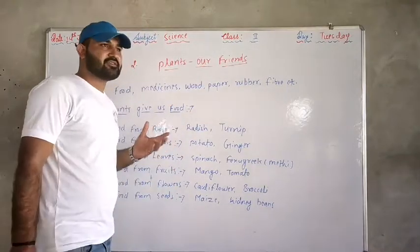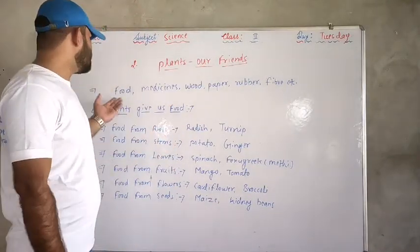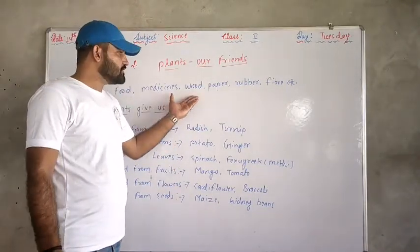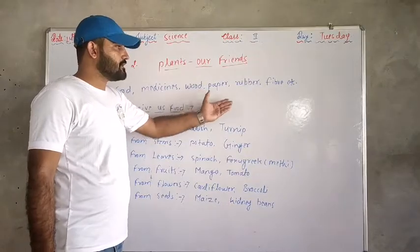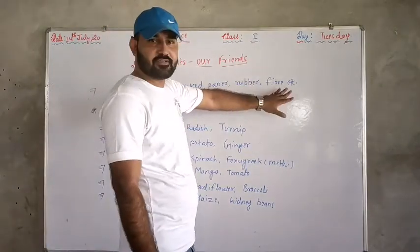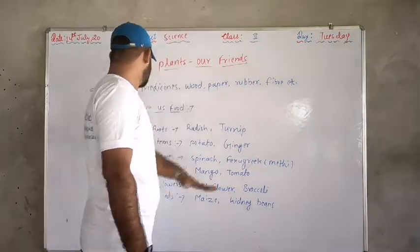What are the methods? Plants give us a lot of things. They give us food, medicine, wood, pepper, rubber, fiber, and more.